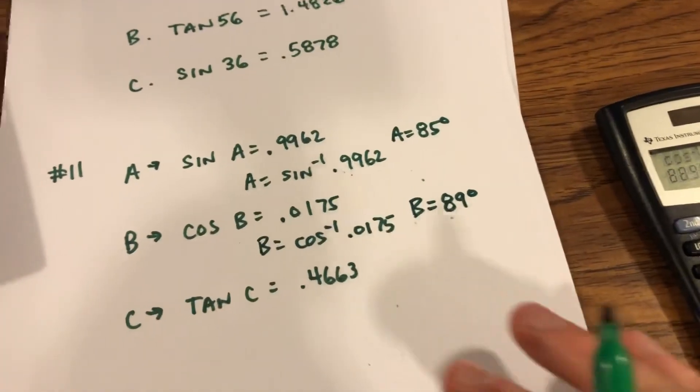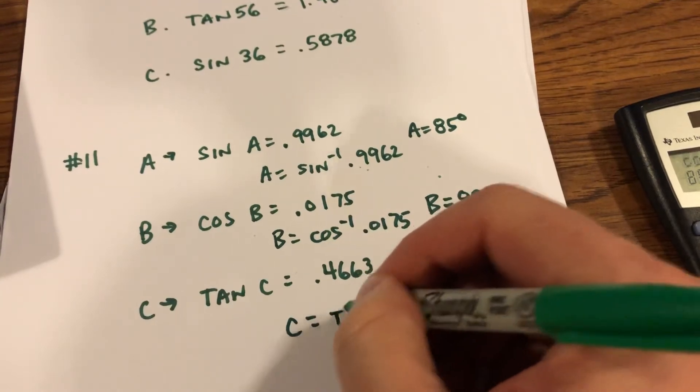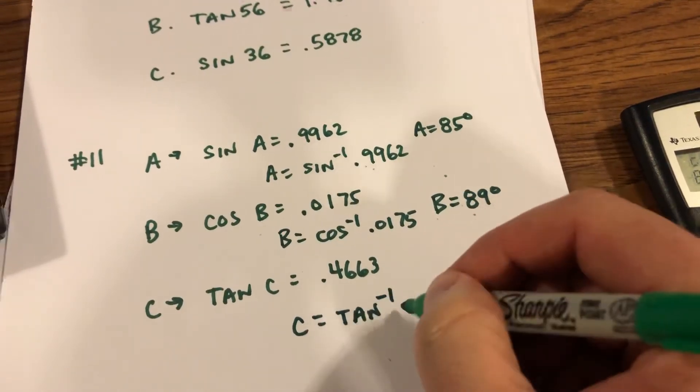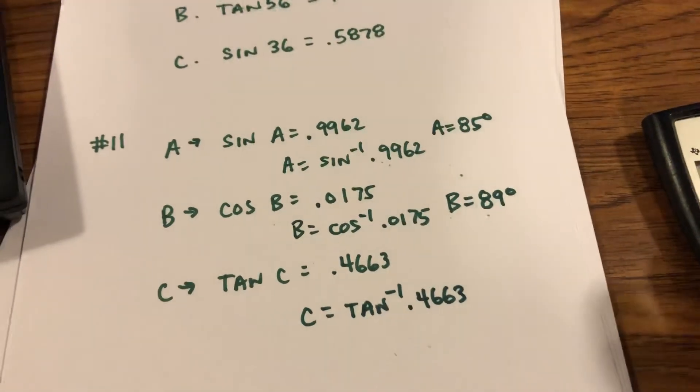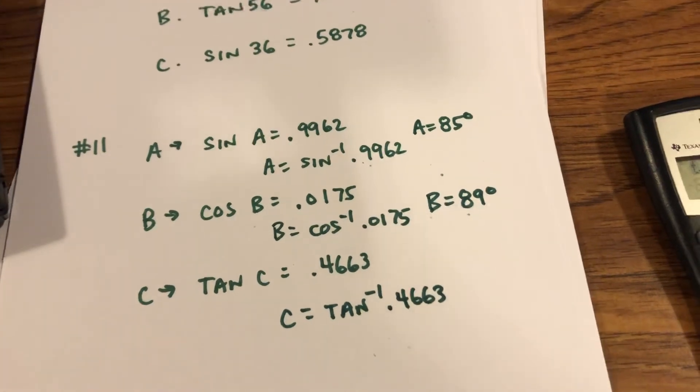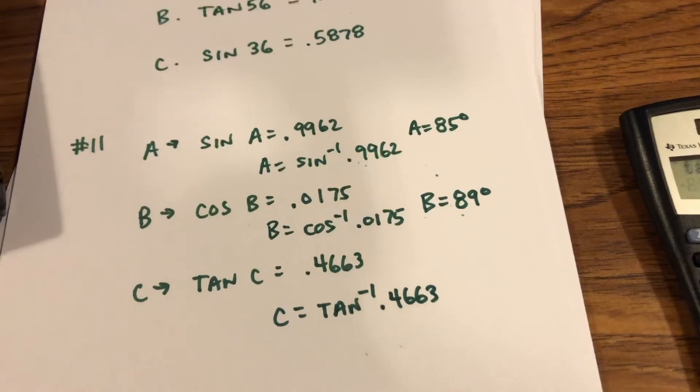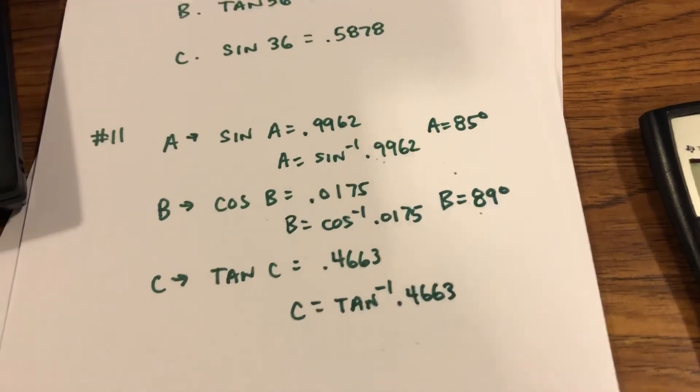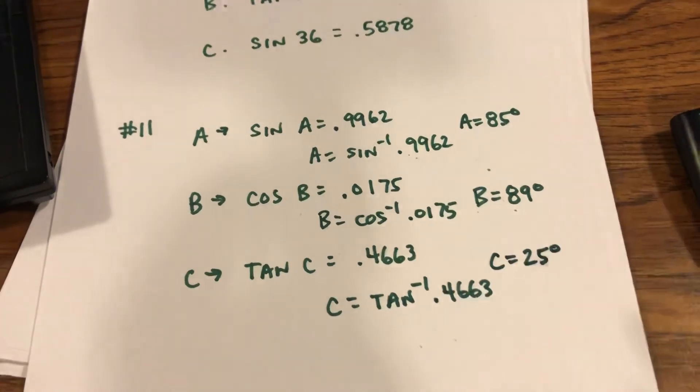Okay, and then the last one, tangent of C. C is going to be the inverse tangent of 0.4663. So again, type that into my calculator, second function tangent, and then 0.4663. And then I hit enter, 24.99, which gets me a C value of 25 degrees.